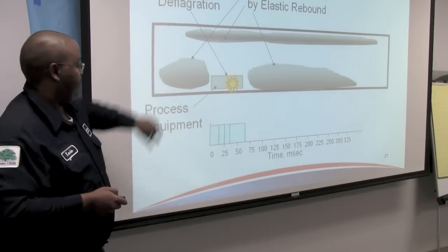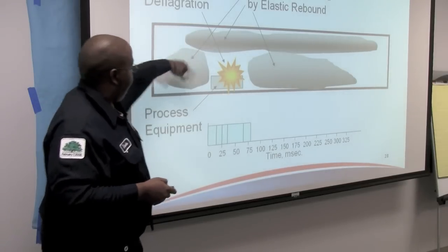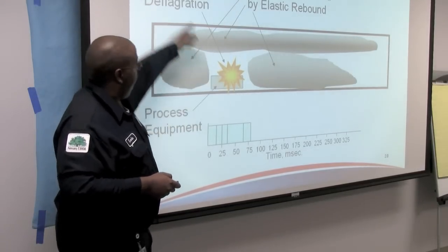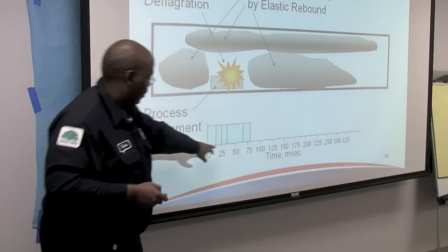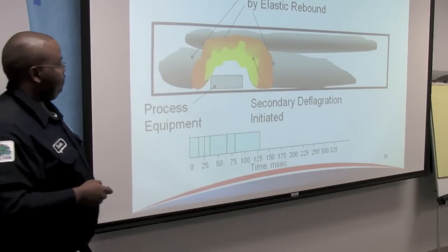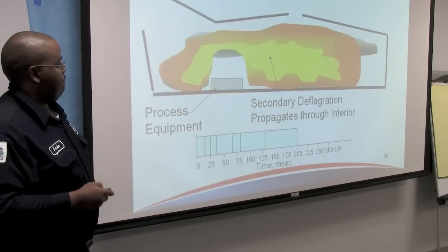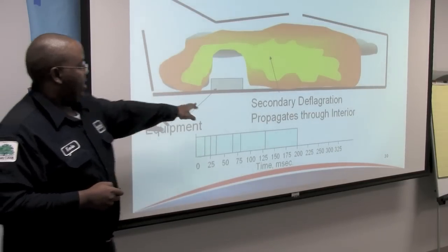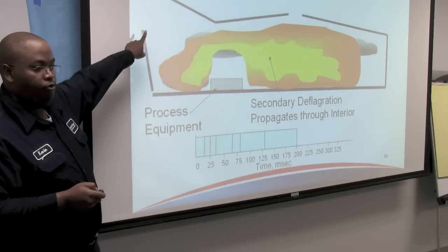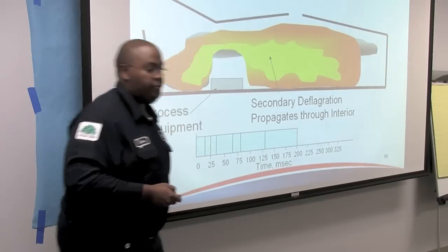A dust cloud caused by the rebound waves leads to containment failure from the initial deflagration. All of this is happening at just over 75 milliseconds. Then secondary deflagration is initiated and propagates through the interior — you start to lose containment and building structure — and we're at 200 milliseconds.